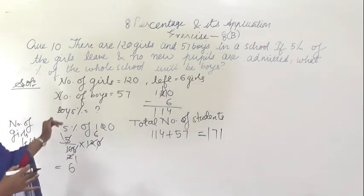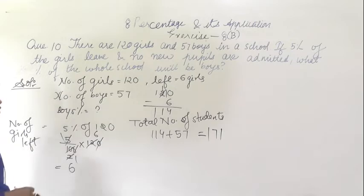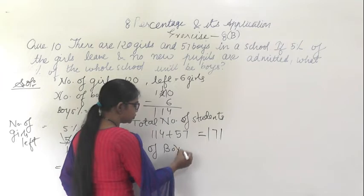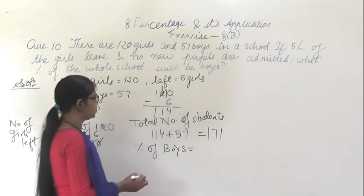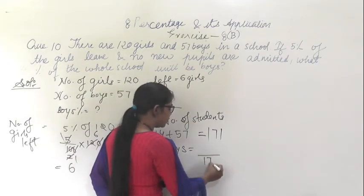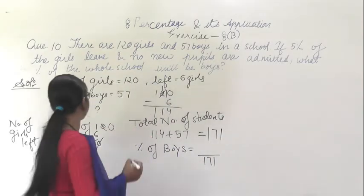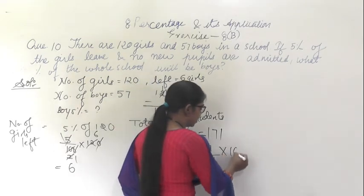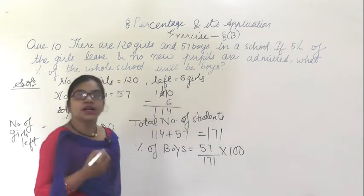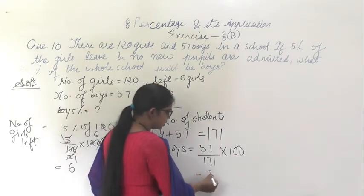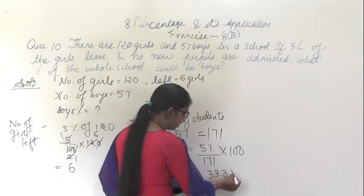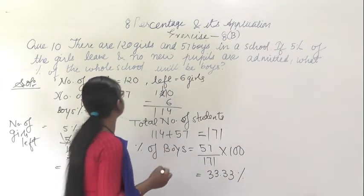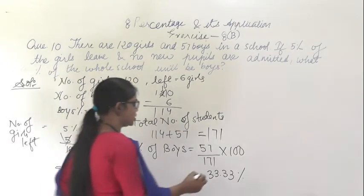We have to find the percentage of boys. The number of boys is 57 out of a total of 171 students. Multiplying by 100 to get the percentage: 57 divided by 171 into 100 gives 33.33%. This is the percentage of boys in the whole school. This is the answer.